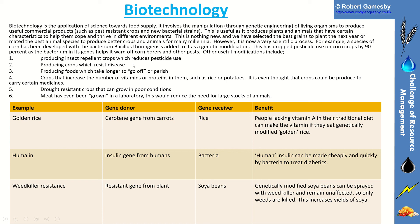There are lots of different modifications possible: producing insect-repellent crops which reduce pesticide use, crops which resist disease, and crops which take longer to perish. One example is golden rice, where a carotene gene from carrots was inserted into rice, meaning that people lacking vitamin A in their traditional diet can produce the vitamin by eating the modified rice. There are also other practical applications listed here.